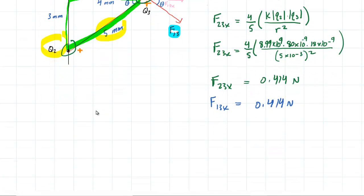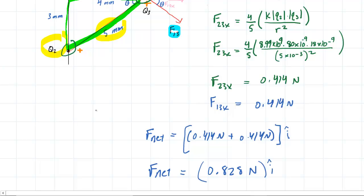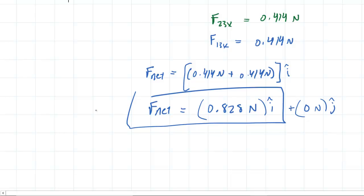Therefore, to get the net force acting on Q3, we simply add these two X components together: 0.414 newtons plus 0.414 newtons. Because they want it in unit vector notation and these are X components, we tack on an i-hat. i-hat symbolizes the X direction. So we end up with about 0.828 newtons in the i-hat direction. There is no Y component, so we don't need to write anything. That's it for part A.